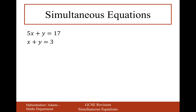Pause the video and give the next one a go. We'll call the top one equation 1 and the bottom one equation 2. The y's are equal to each other again, so we do equation 1 take away equation 2 — always preferring the higher x-count minus the lower. 5x take away x is 4x. y take away y cancels out. And 17 take away 3 is 14.